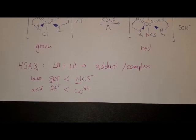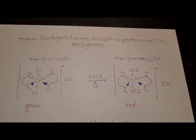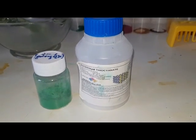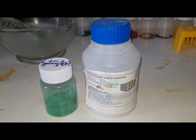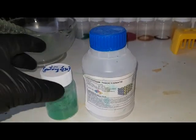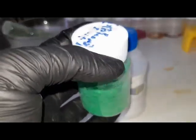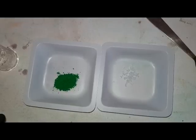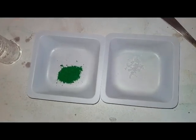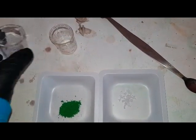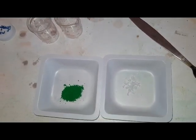And now it's time to synthesize this complex and go down to the lab. Alright, so now we're down in the lab, and it's time to start the synthesis. So what we'll do is measure out one gram of dichlorobis ethylenediamine cobalt 3 chloride, which is this green complex, and one gram of potassium thiocyanate. Okay, so now we have one gram of each.